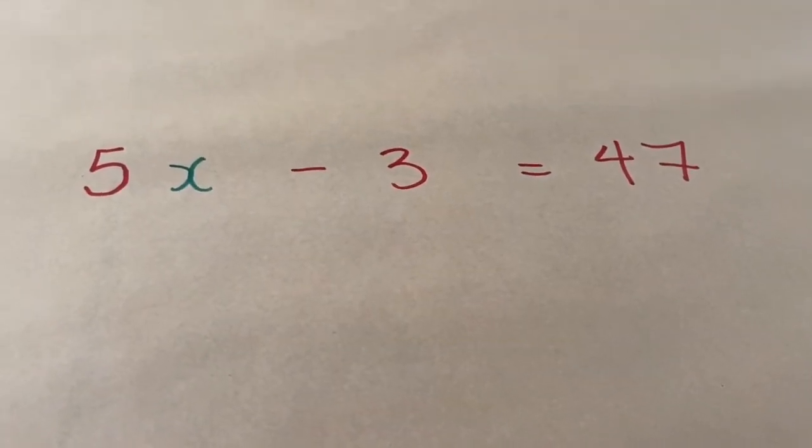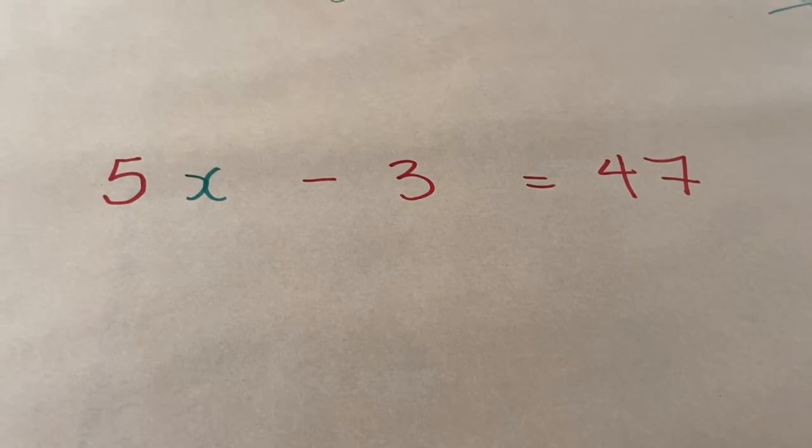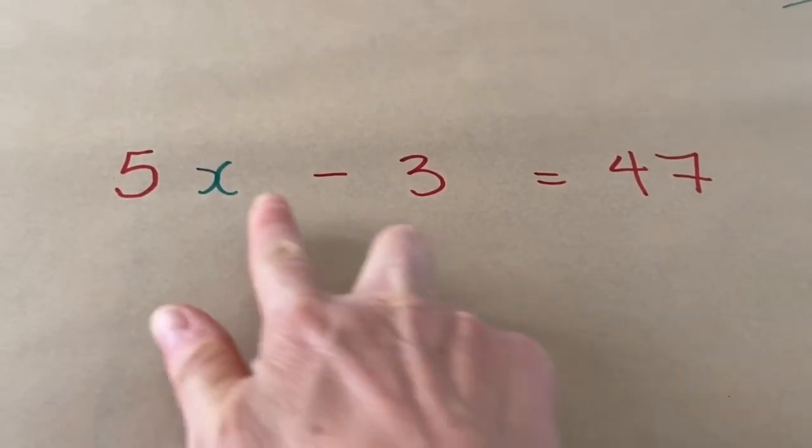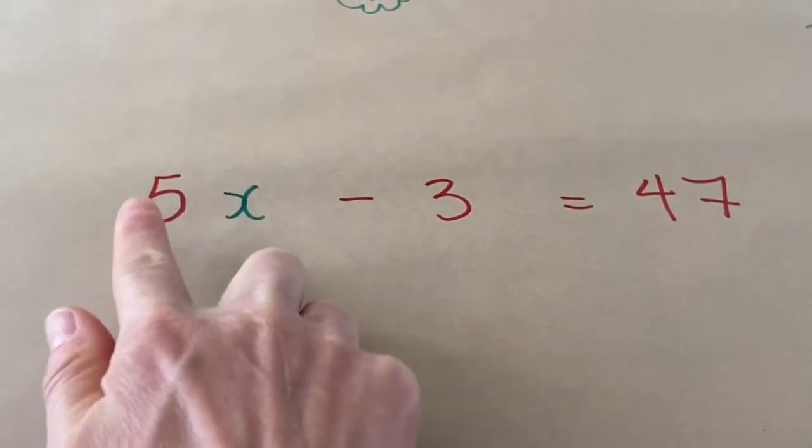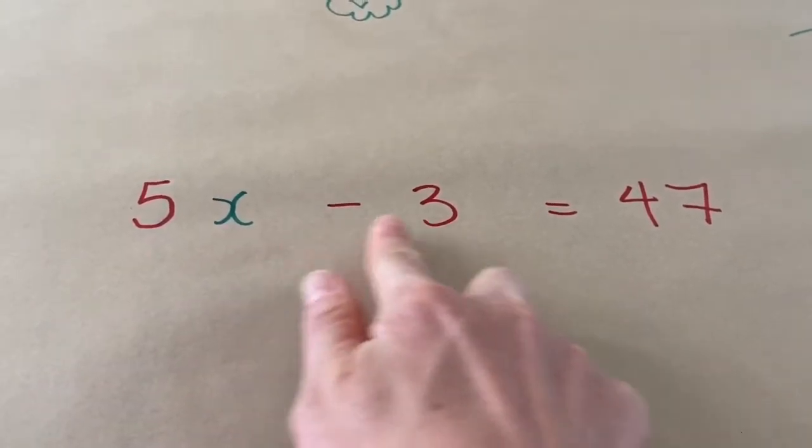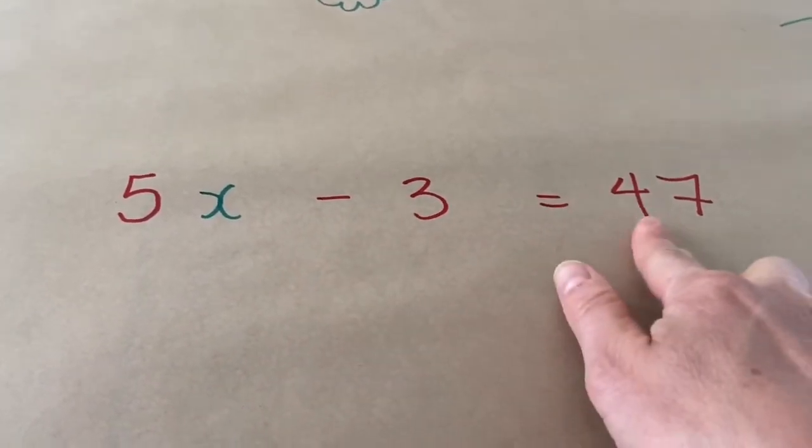So, let's try this last question together, and then I'll leave you with a couple to try for homework. So, here I started with an x. I multiplied it by 5, and then I subtracted 3, and my final answer was 47.